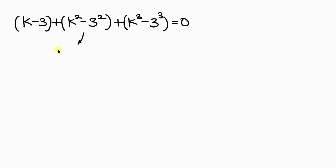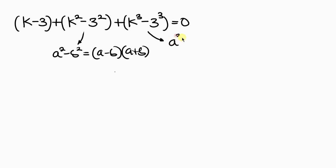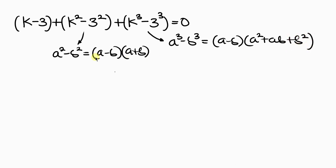Notice that we have difference of two squares, and we have difference of two cubes. For difference of two squares: a squared minus b squared can be written as (a minus b)(a plus b). For difference of two cubes: a cubed minus b cubed can be written as (a minus b)(a squared plus ab plus b squared). If we compare, our a is k, while our b is 3.